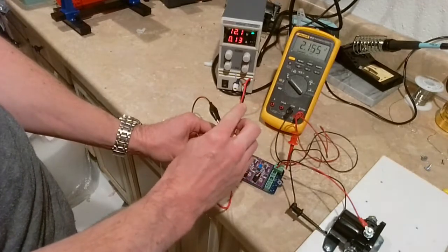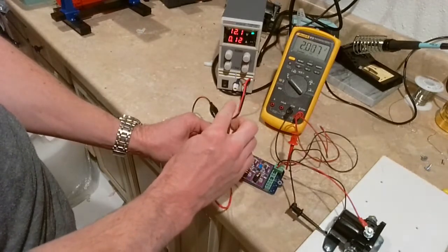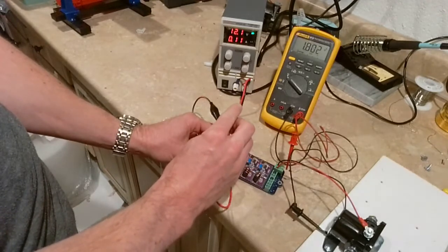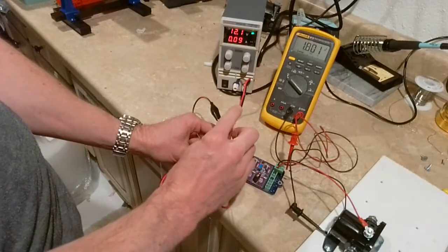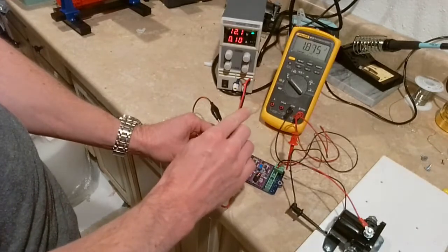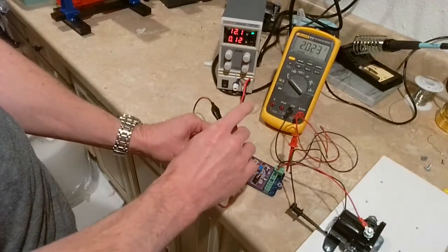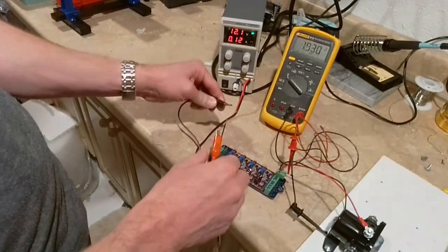Or you can decrease it all the way down until the solenoid drops out. You can see it usually happens around 1.5 volts. Yeah, there you go, so it dropped out right there. And so we know that that's about as low as we can go. Turn it up a little higher than that.